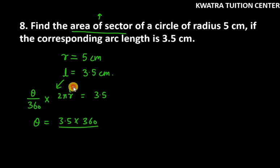How much is the value of R here? 5. So 2 into 5 is 10. 10 and pi will come to us. 0 from 0 will cancel. So theta is 3.5 into 36 over pi.